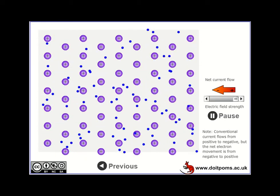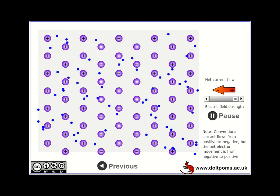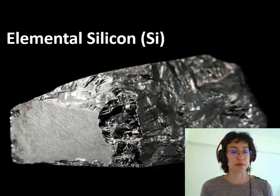So why are semiconductors and how are semiconductors different to this? To explain, I'll take elemental silicon as an example because it's the most commonly used semiconducting material.